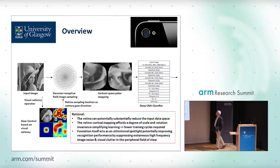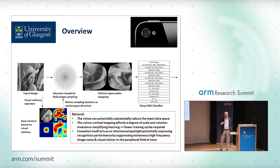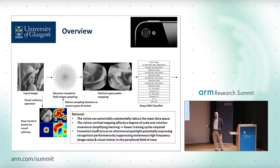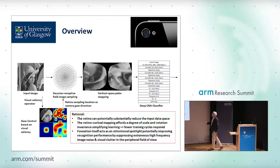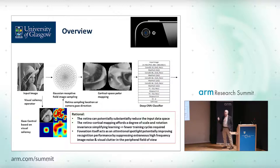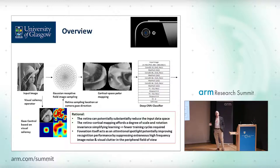Vision isn't a passive activity — it requires active interaction with the environment. We direct our eyes because they're driven to complete some task; the only point of having vision is to be able to do something with it. So we have a gaze control system that directs the fovea, the high-resolution part, to appropriate locations in the image. The overall rationale is: the retina substantially reduces the data space going into the net, the mapping affords scale and rotation invariance, and the fovea acts as an attentional spotlight — with the potential to actually improve system performance.